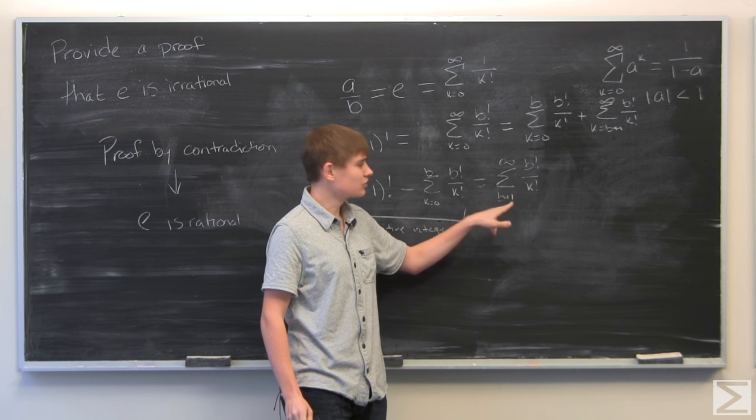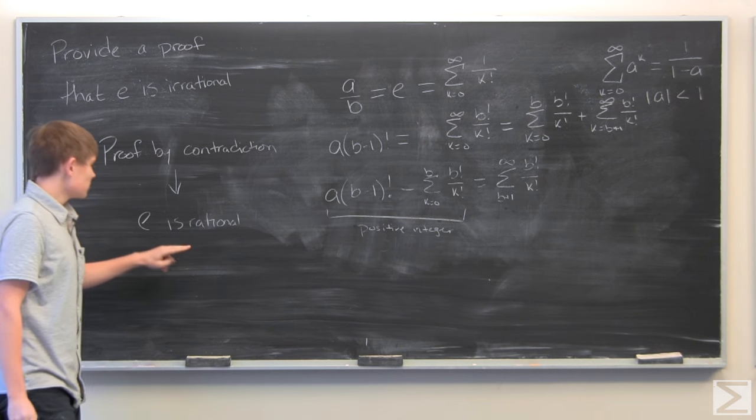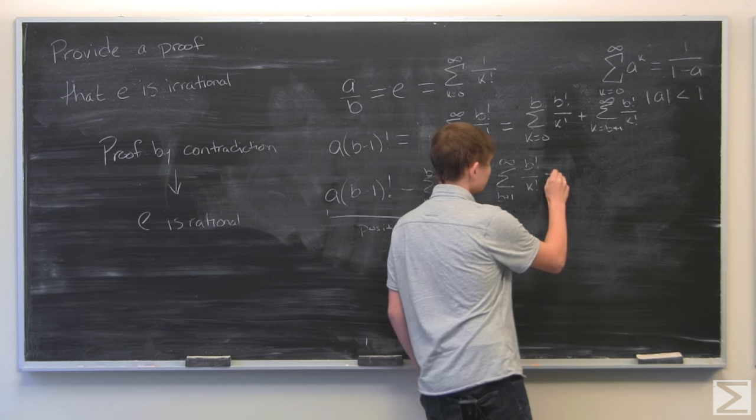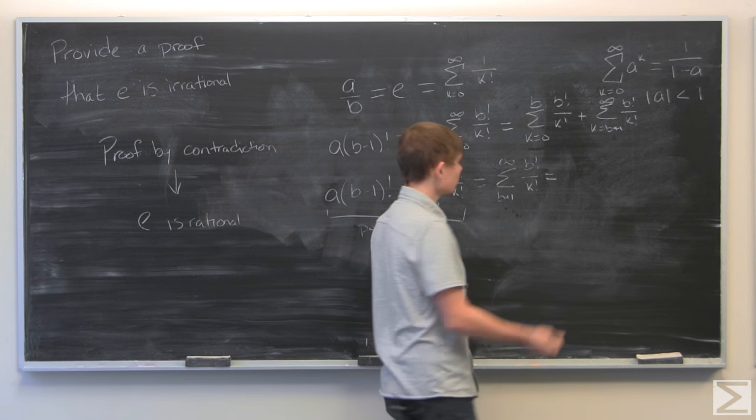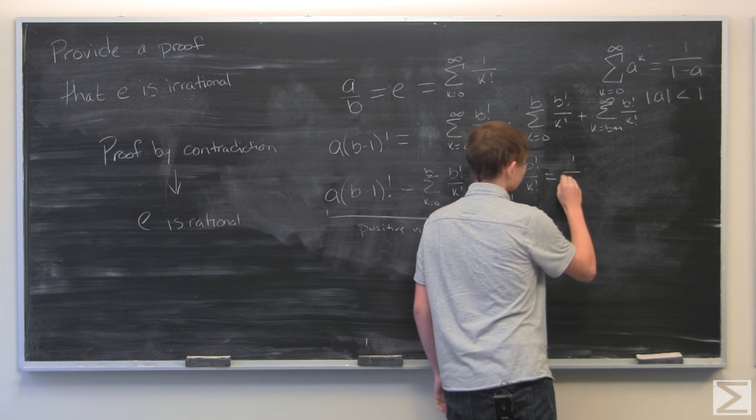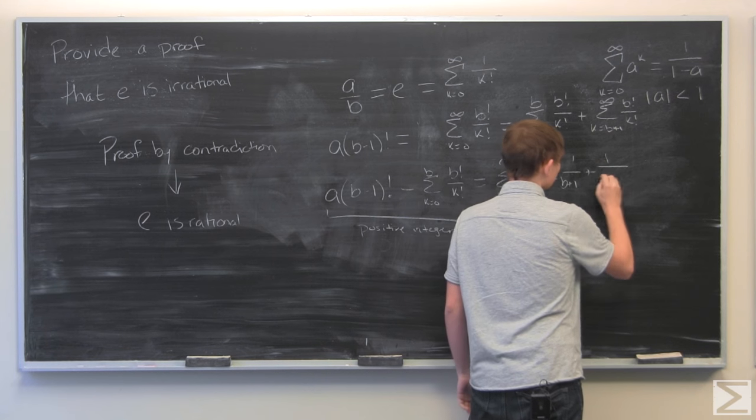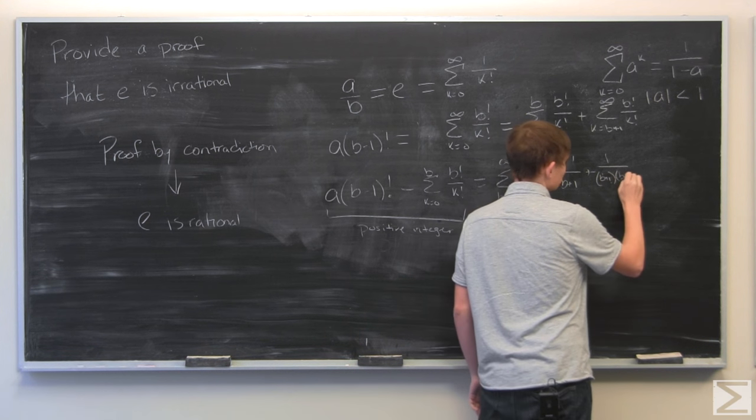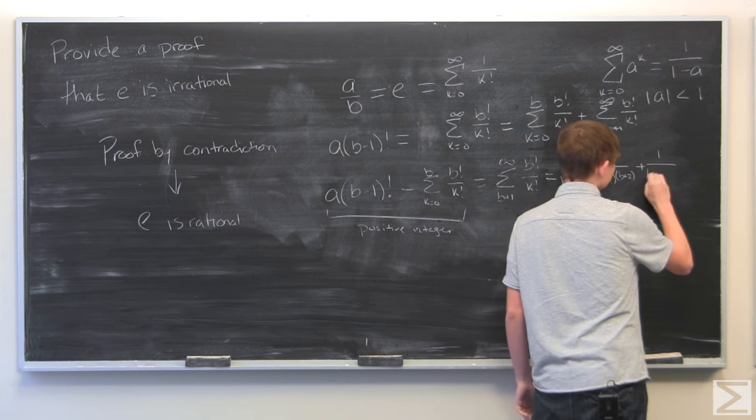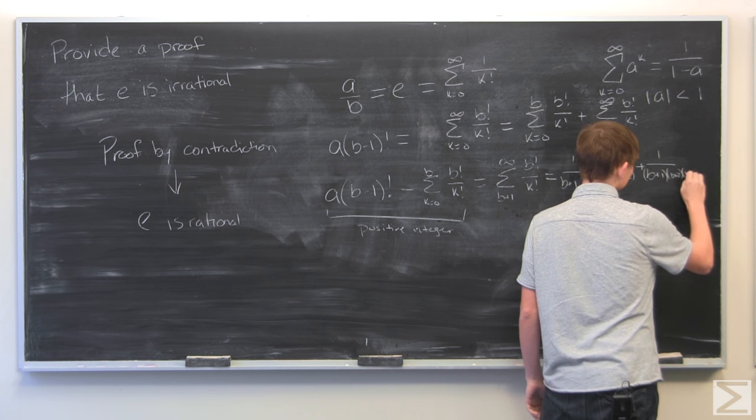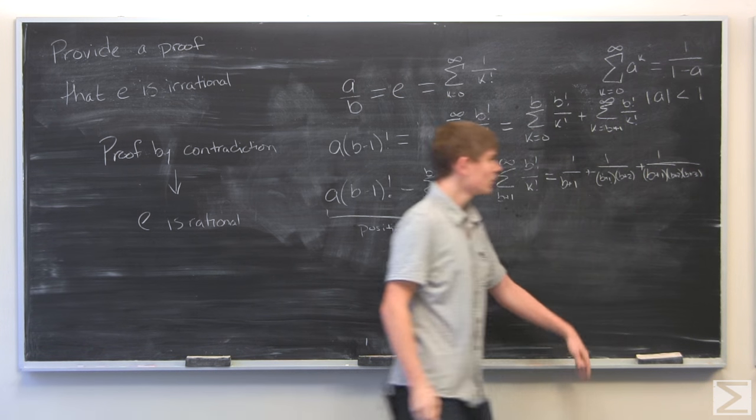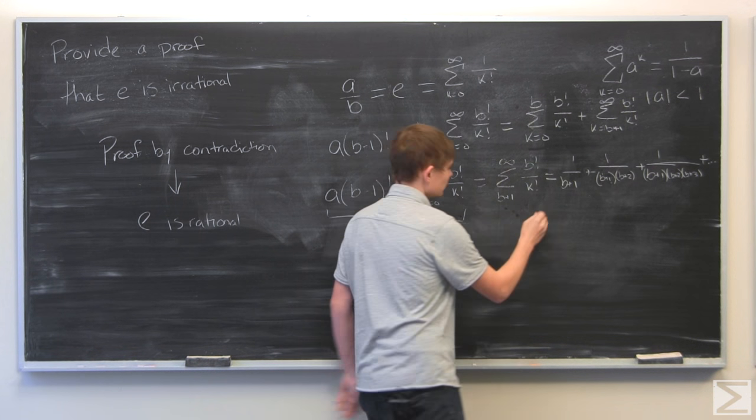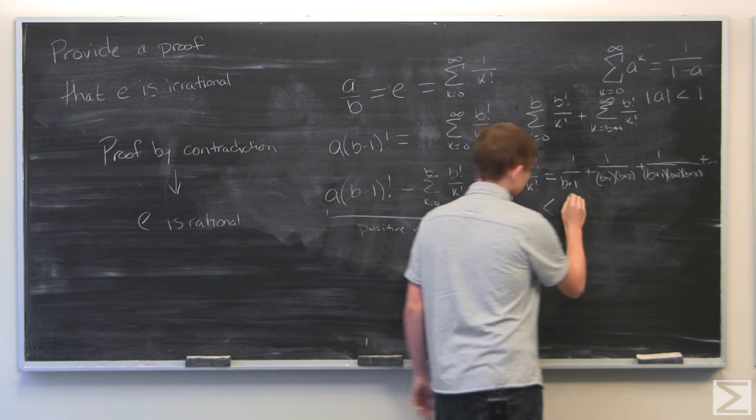And so, what we have to do is show that this is not a positive integer, which means that this is false and therefore e is irrational. So, if we write out the first few terms of this, we have 1 over B plus 1 plus 1 over B plus 1 times B plus 2, and so on.